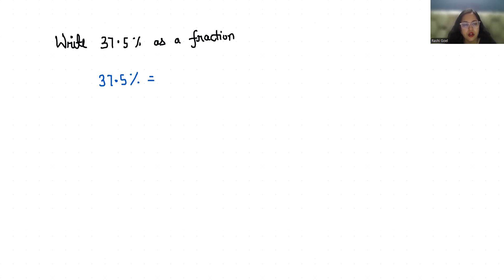First I am going to remove this decimal. We are going to write it in terms of fraction by writing 1 in the denominator. Now I am going to multiply with the number of 10s depending upon the digits after decimal. There is one digit after decimal, so multiply 10 in the numerator as well as in the denominator.